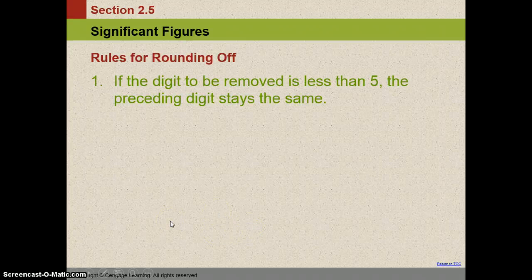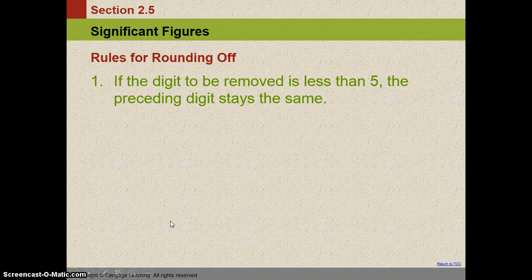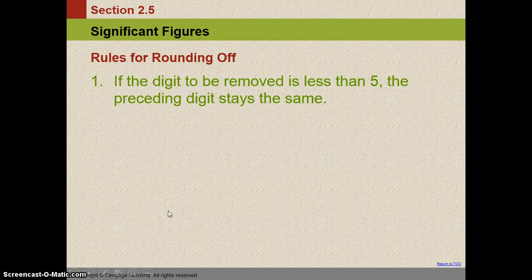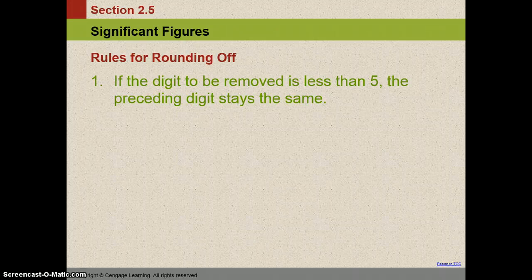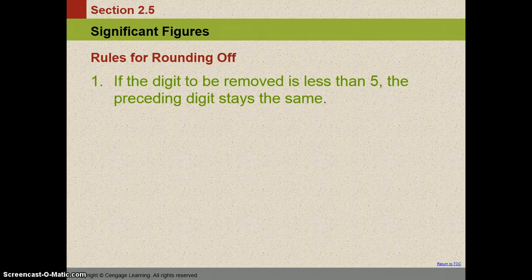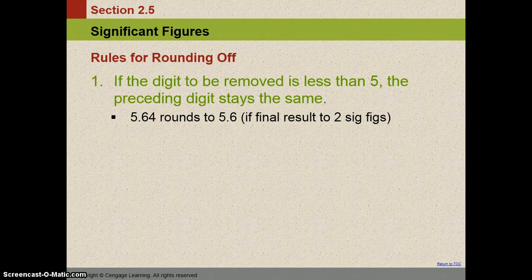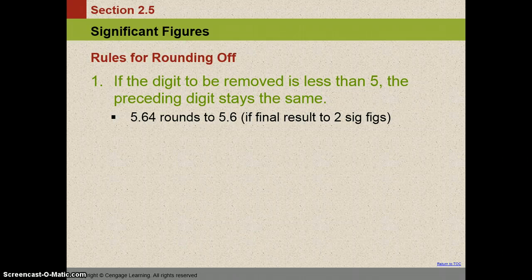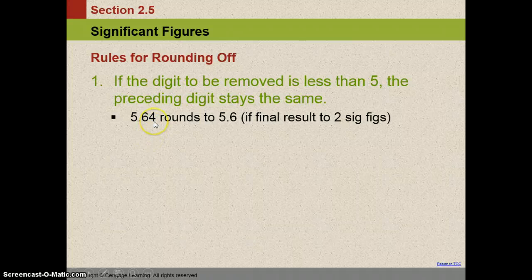Alright, now we're going to look at the rounding off rules when it comes to sig figs. The rules for rounding off and sig figs are just the same as they are in math class. Remember that if the digit to be removed is less than five, it stays the same. And in this example, we have 5.64 and we're going to round that to 5.6. If you look here, this is the position we look at. It's less than five. So we're going to leave this number the same.